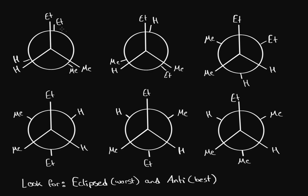We have eclipsed interactions on this one and on this one. Now, how do we know which one is better than the other? If you have big groups — like these ethyl groups, labeled ET, and methyl groups, labeled ME — if they're big, they have large electron clouds. So if they're right next to each other, they're going to end up interfering way too much. We're going to look at where the smallest groups are eclipsed to each other.